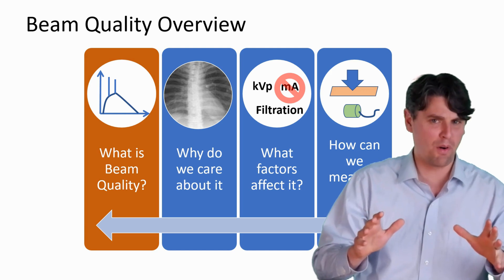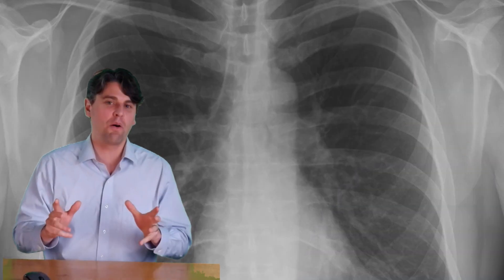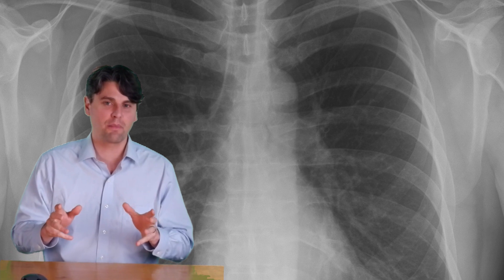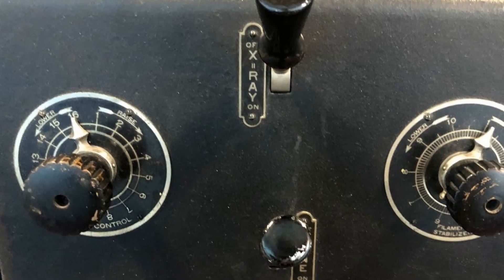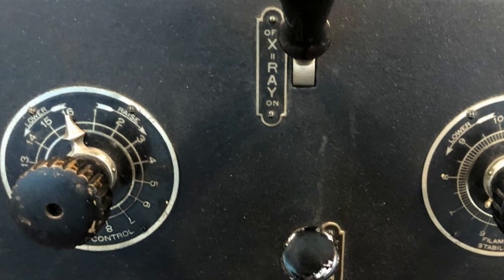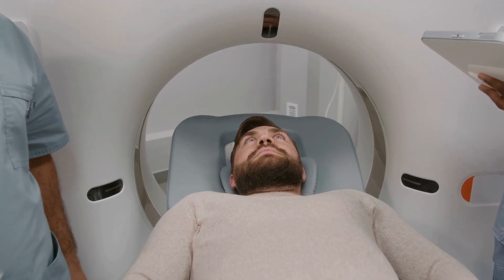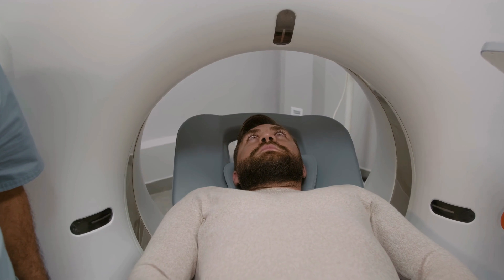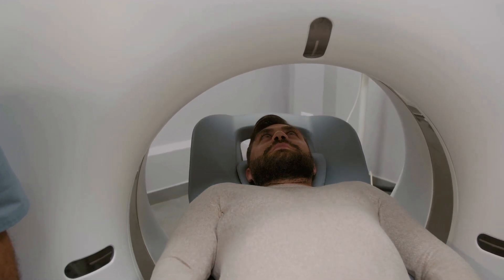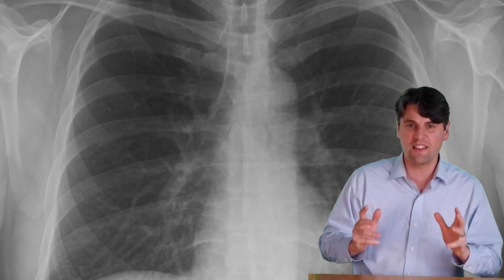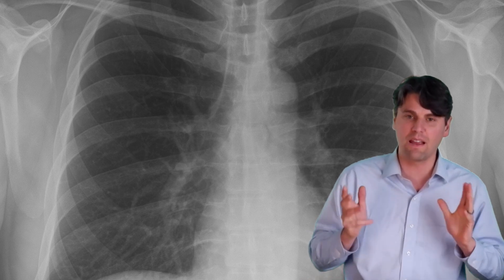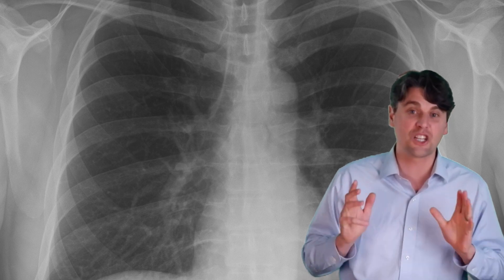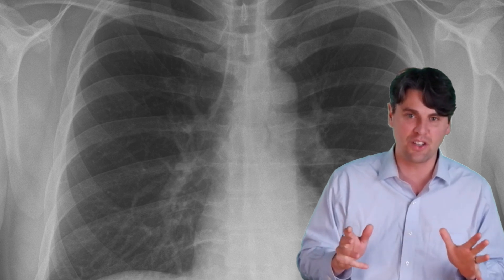First, we're going to talk about what is beam quality. Quality is actually how we describe the x-ray spectrum. It's just saying that the x-ray beam coming out from one setting and a different setting actually have a different quality. So that means they're going to pass through the patient differently. Specifically, the things that we talk about most are the x-ray spectra. So saying beam quality means that the shape of the x-ray spectra is changing.